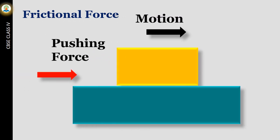When two objects are in motion and their surfaces are in contact with each other, then a force acts between them which opposes their motion. This force is called friction or frictional force.